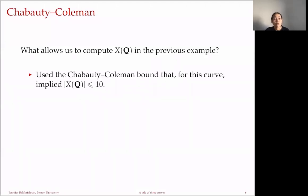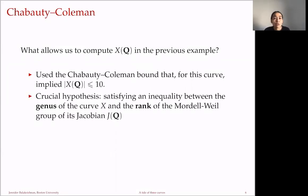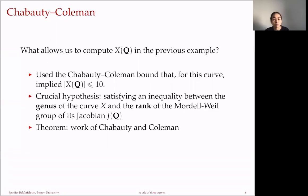The Chabauty-Coleman method implied that this curve has at most 10 rational points. Behind the scenes, crucially, we satisfied an inequality between the genus of the curve, which is 2, and the rank of the Mordell-Weil group of its Jacobian, which we computed to be 1. Since that applied, we used work of Chabauty, later reinterpreted by Coleman, to get an effective bound that turned out to be sharp. This is a p-adic method and there is some choice of prime involved.